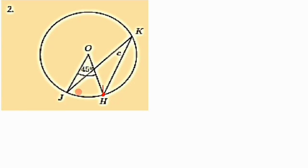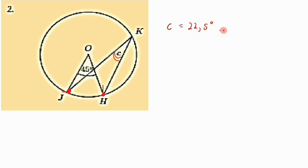In diagram two, our arc is JH. Arc JH subtends an angle at the center of 45 degrees, and it also subtends angle C at the circumference. Since the angle at the center has to be twice the angle at the circumference, angle C must be half of 45 degrees, which is 22.5 degrees. The reason remains: angle at center equals two times angle at circumference.